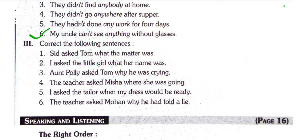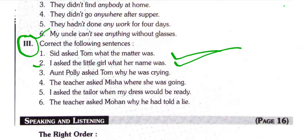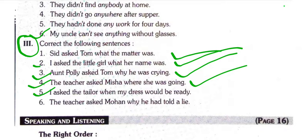'My uncle cannot see anything without glasses.' Question three — correct the following sentences: 'Sid asked Tom what the matter was.' 'I asked the little girl what her name was.' 'Aunt Polly asked Tom why he was crying.' 'The teacher asked Misha where she was going.' 'I asked the tailor when my dress would be ready.' 'The teacher asked Mohan why he had told a lie.'